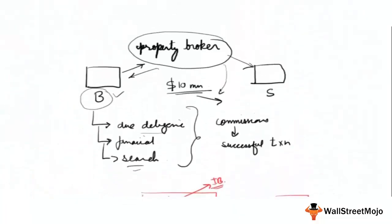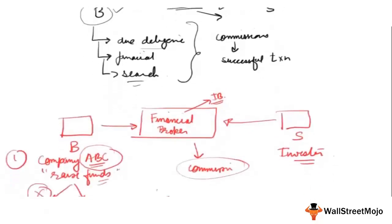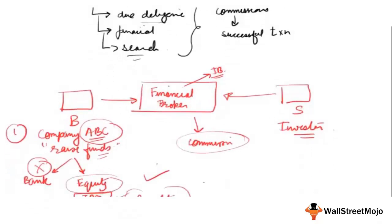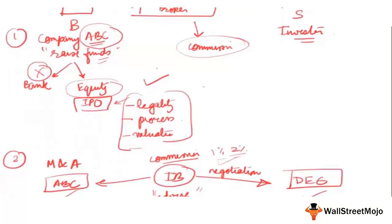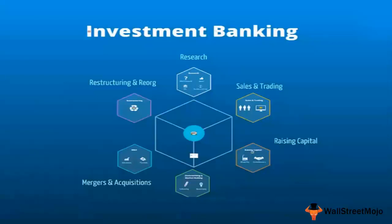In summary, think of investment bankers like property brokers, but for financial transactions. They add significant value by connecting companies looking to raise funds or pursue mergers and acquisitions with the right counterparties. Investment banks do many other things as well, which will be covered in following lectures. Hopefully, you can now appreciate the key difference between an investment bank and a commercial bank.